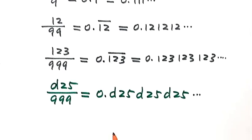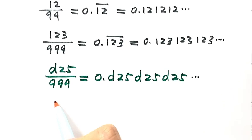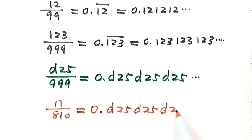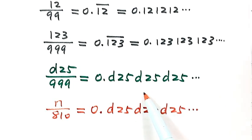Then based on the given condition, n over 810 equals 0.d25d25d25d25 and so on. Because the two numbers are the same,